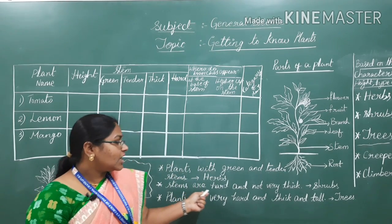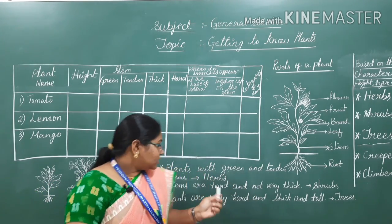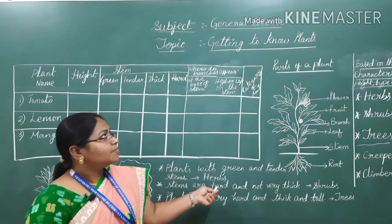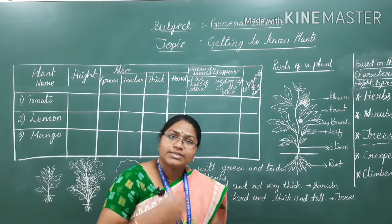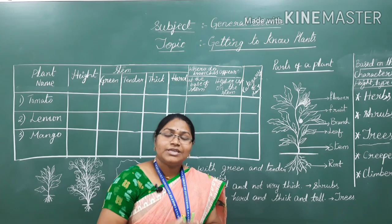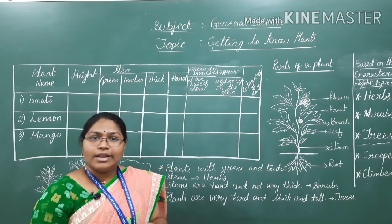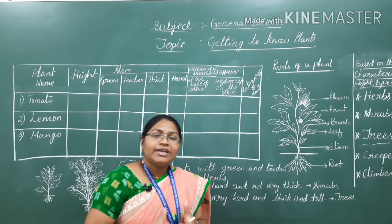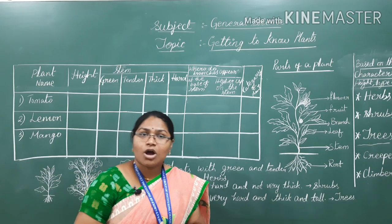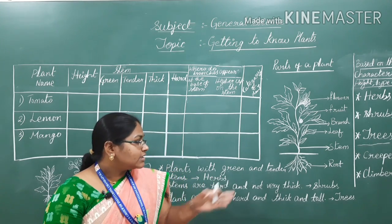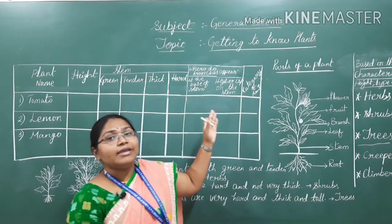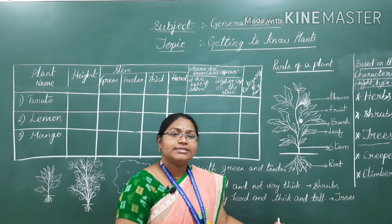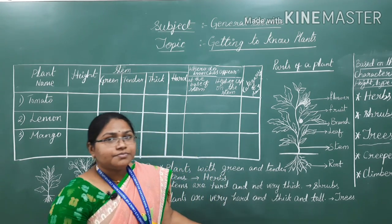Shrubs have stems that are hard but not very thick. In shrubs, branches appear at the base of the stem. Such plants are called shrubs — for example, lemon and jasmine. Next, trees are plants that are very thick and tall. The stem is very hard and thick, and branches appear higher up on the stem. Such plants are called trees — for example, neem, banyan, and mango trees.